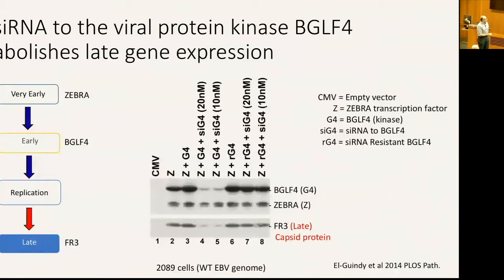We concluded that BGLF4 is really important in the process of transcription or synthesis of late products. We did an RNA-seq experiment using our siRNA and looked at the whole viral genome. Most of the genes affected when you knock down BGLF4 are actually late genes — confirming that BGLF4 specifically regulates late gene expression.